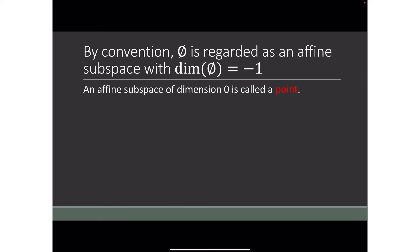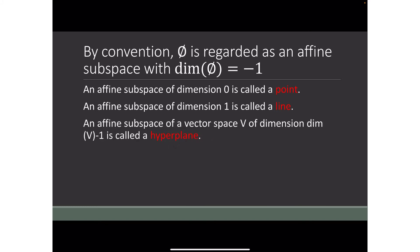An affine subspace of dimension zero is called a point. An affine subspace of dimension one is called a line. An affine subspace of a vector space V of dimension dim(V) minus one is called a hyperplane. So to summarize: dimension zero is a point, dimension one is a line, and dimension dim(V) minus one is a hyperplane.